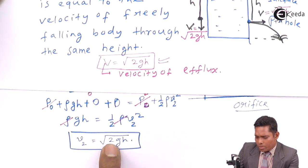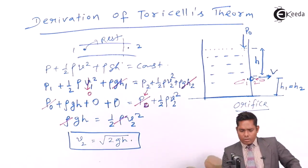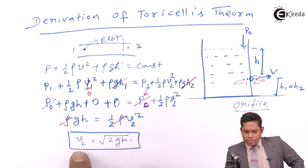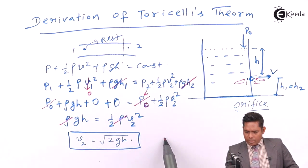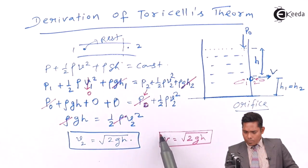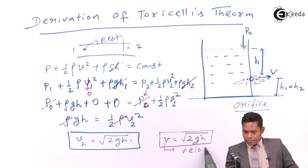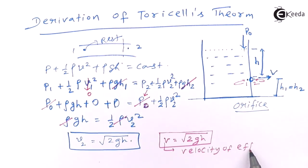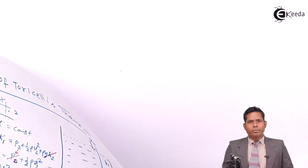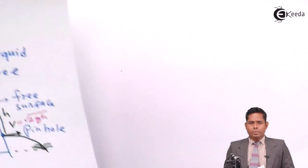Finally, you can write that V = √(2gh). This is the derivation of Torricelli's theorem. That is all in this video. Thank you very much.